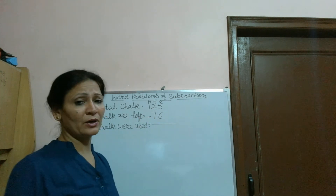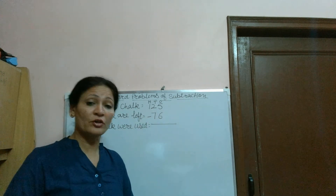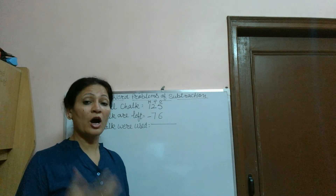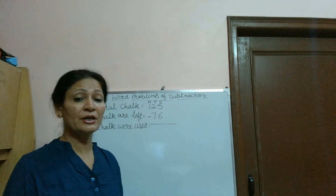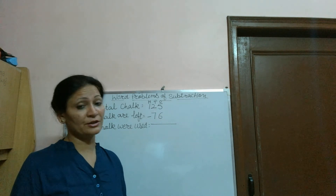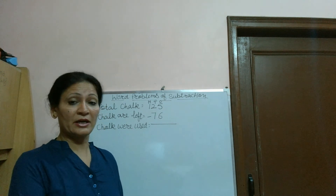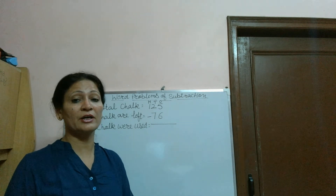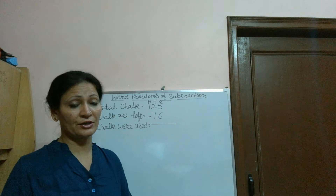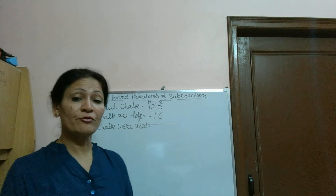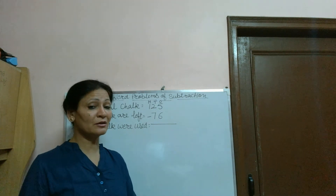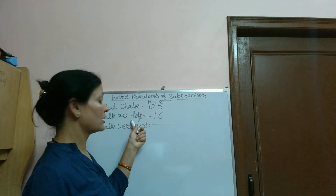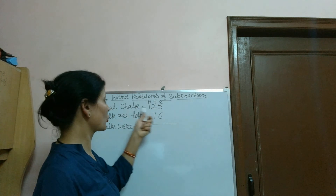Take an example: I have 10 chocolates and 5 chocolates are left. So 10 minus 5 equals 5 chocolates. 10 is total, 5 is left. So we subtract. There is left and total is here — chalk were used.